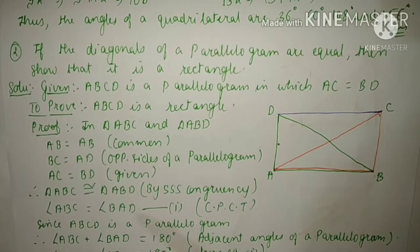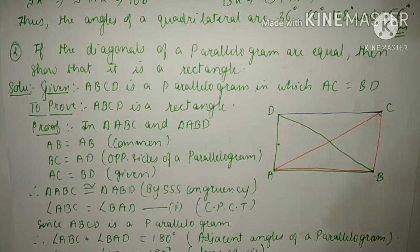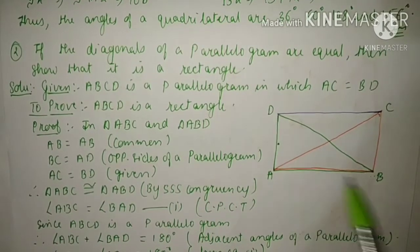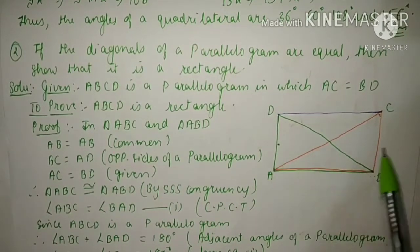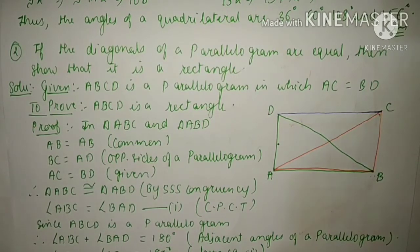First, AB is equal to AB — this side is common in both the triangles. Then BC equals AD. BC is equal to AD because these are opposite sides of a parallelogram, and opposite sides of a parallelogram are equal.